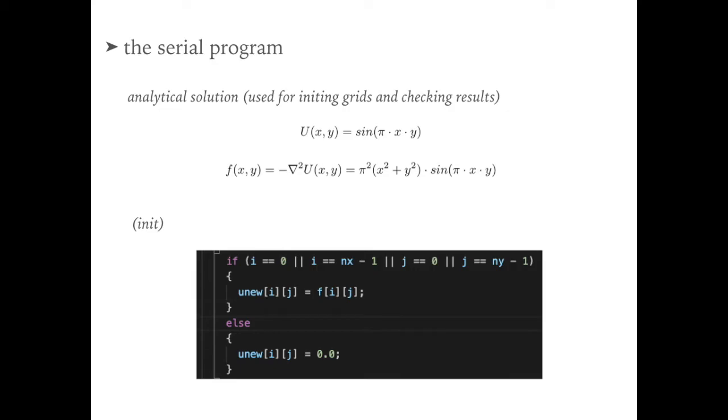Let's look at a real example. If we assume u(x,y) equals to sin(π times x times y), and f(x,y) equals to negative nabla squared of u(x,y) equals to π squared times (x squared plus y squared) times sin(π times x times y). By this way, we can get a Poisson equation, and sin(π times x times y) is the analytical result of this Poisson equation.